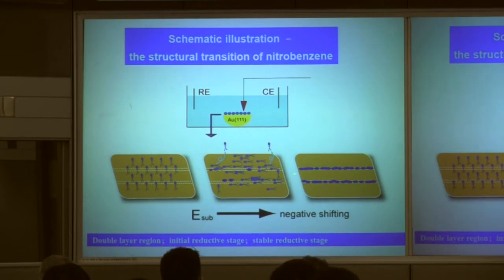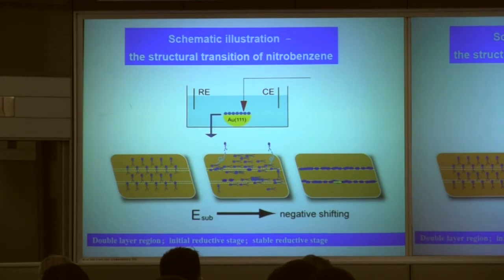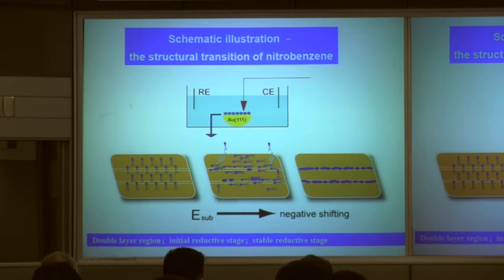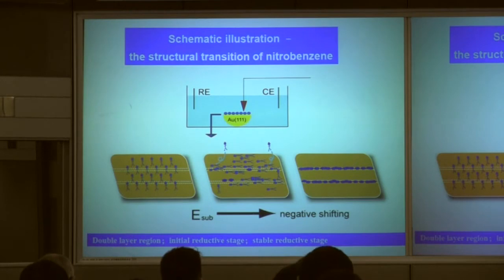These are the reconstructed lines on the Au(111) surface, where the surface energy is very high. So the molecules preferentially go to the reconstructed lines in this area, and the total surface energy is thereby decreased.